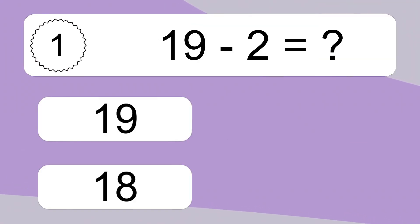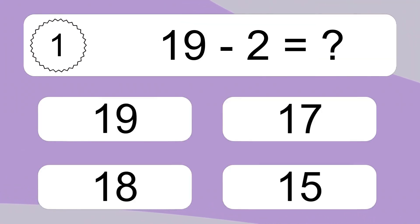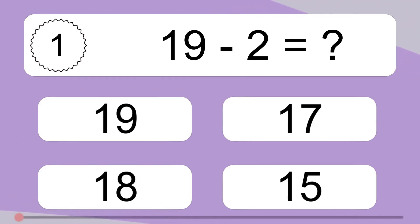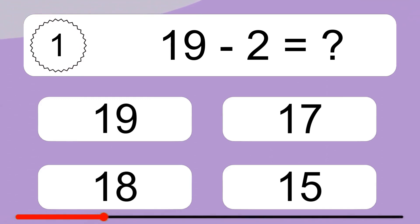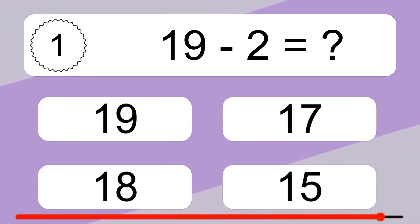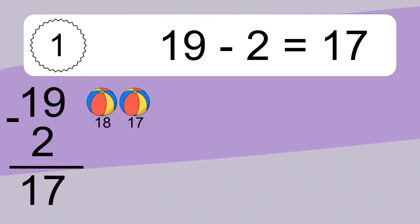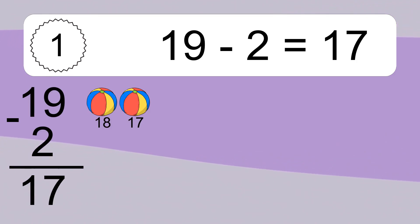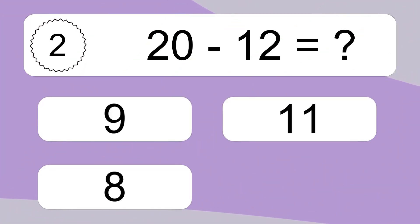19 minus 2 equals what? 19 minus 2 equals 17. Let's count it: 18, 17.